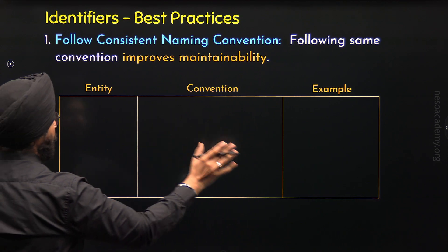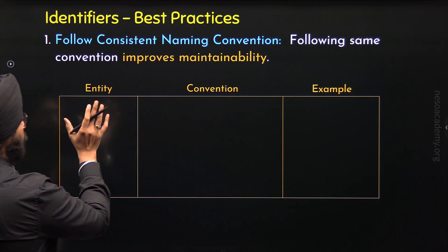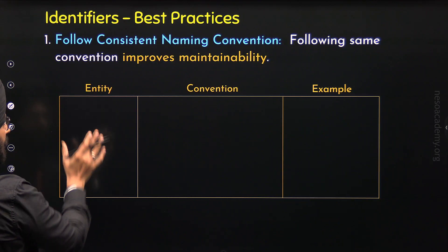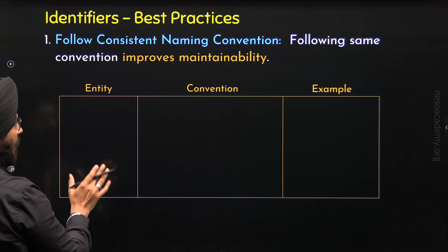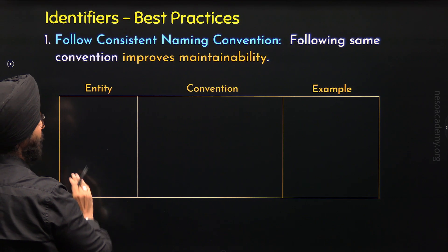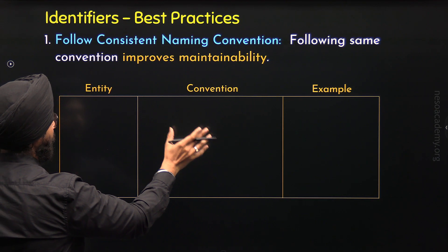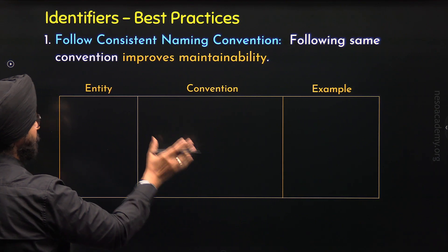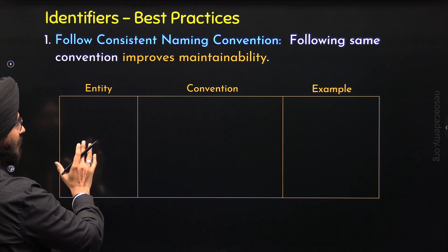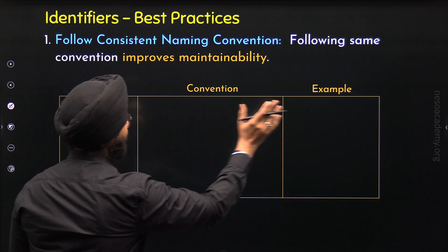Now let's see what are the different entities we have in C++ and what conventions we can follow for those entities. Here in this table, I am going to list down all the entities. Apart from this, I will also provide the conventions for those entities and examples.